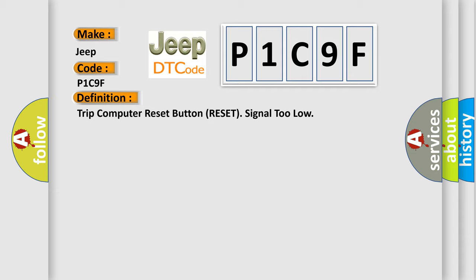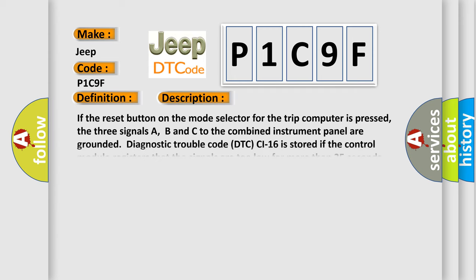And now this is a short description of this DTC code. If the reset button on the mode selector for the trip computer is pressed, the three signals A, B, and C to the combined instrument panel are grounded. Diagnostic trouble code DTC CI-16 is stored if the control module registers that the signals are too low for more than 25 seconds. This diagnostic trouble code DTC cannot be stored in bi-fuel cars.